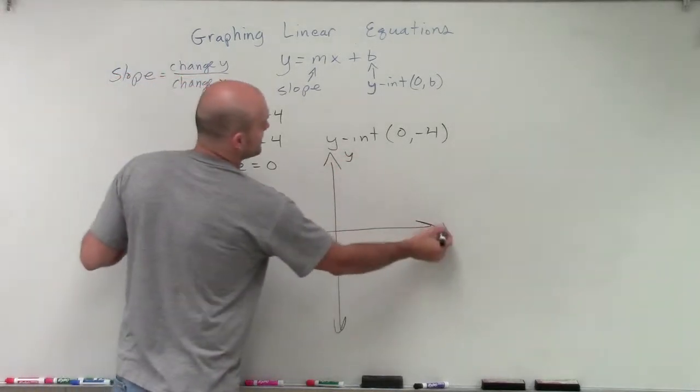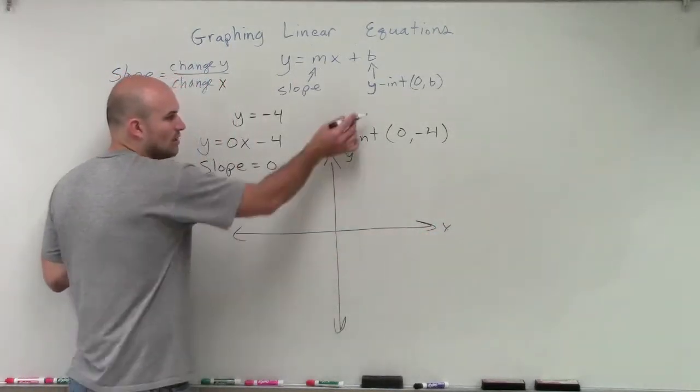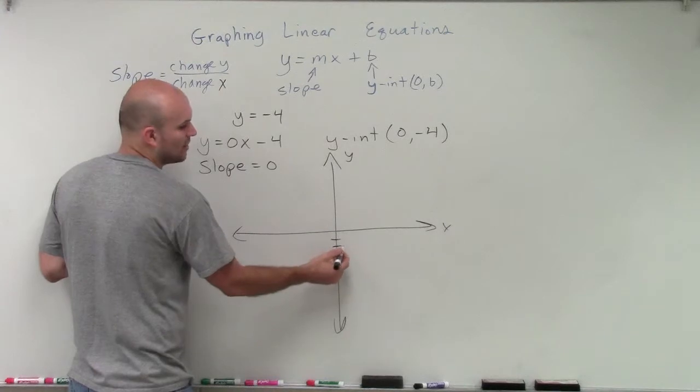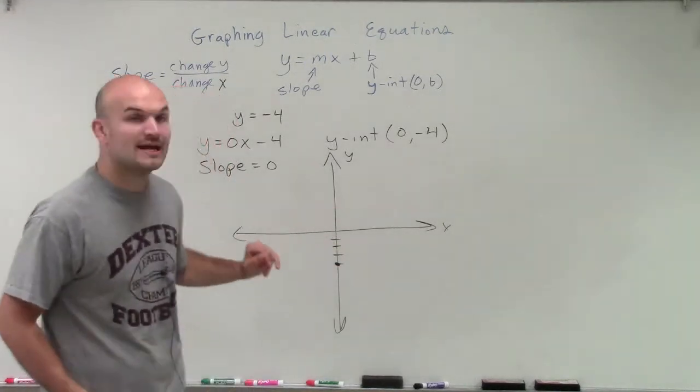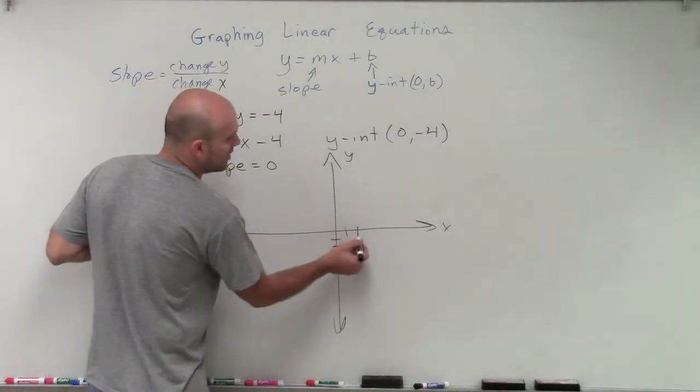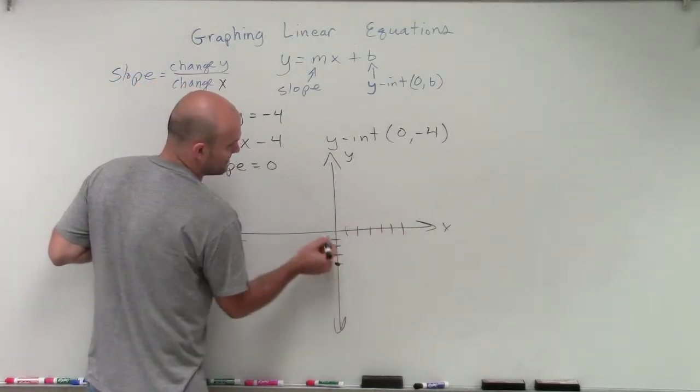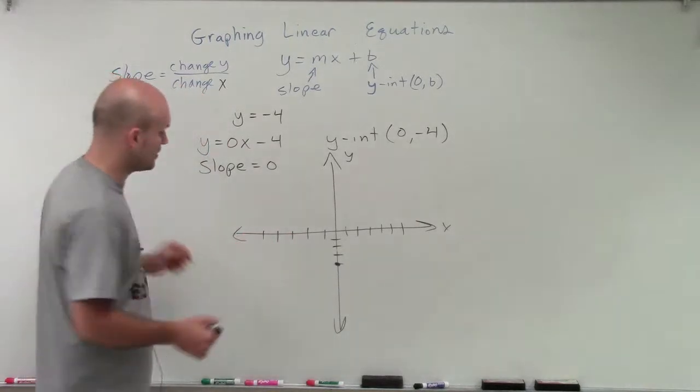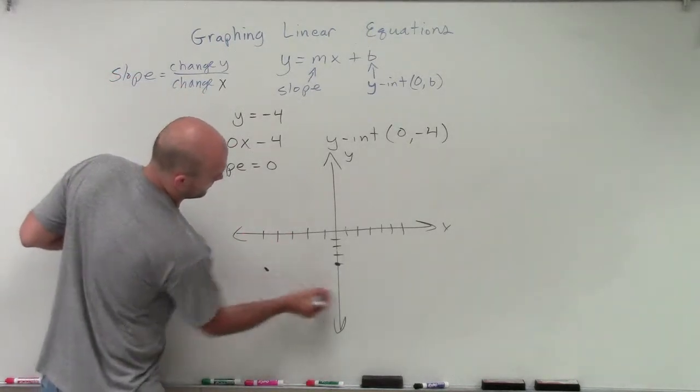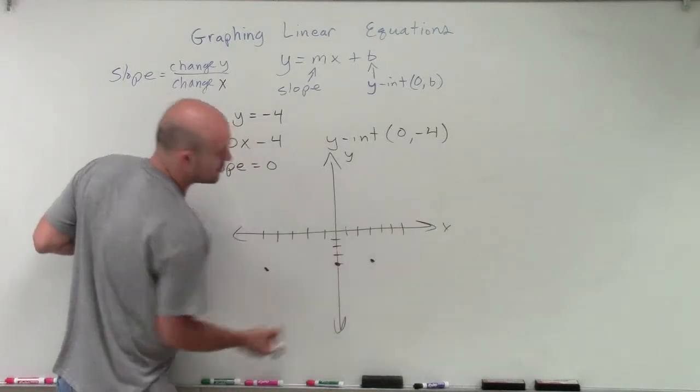Our y-intercept is at 0, negative 4. So I'm going to go down negative 4 on my y-axis and plot that point. Now, if I'm going to create a horizontal line at 0, negative 4, I know that no matter what value I pick for x, I'm always going to have a y-value of negative 4. Doesn't matter which one, because I'm creating a horizontal line.